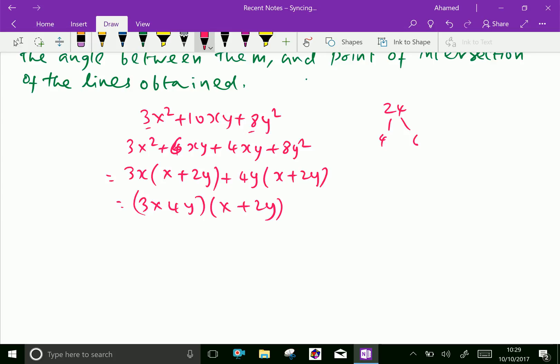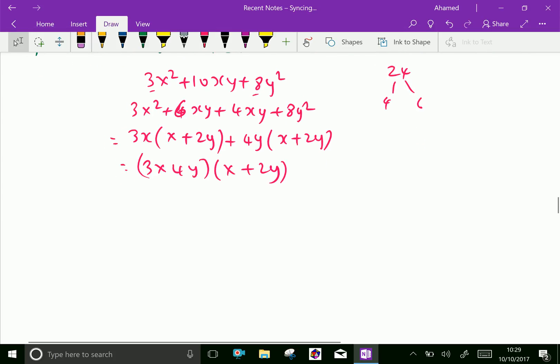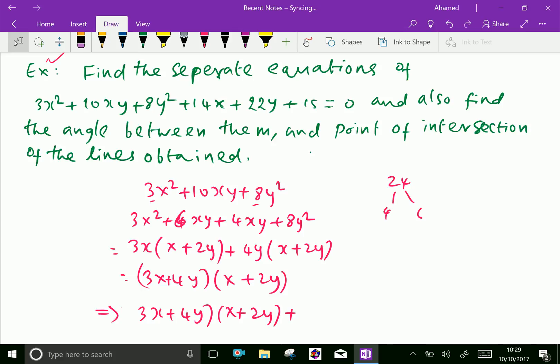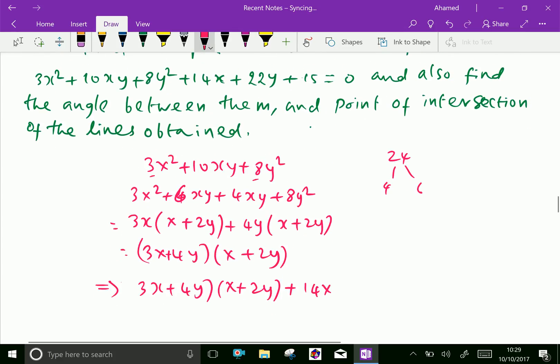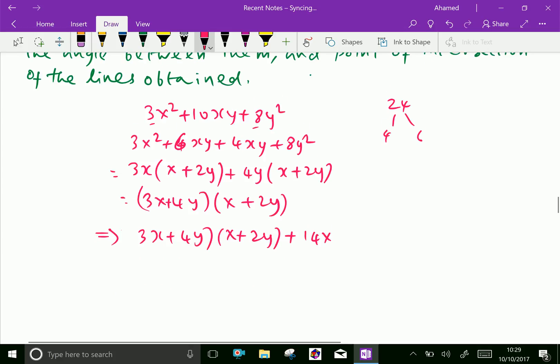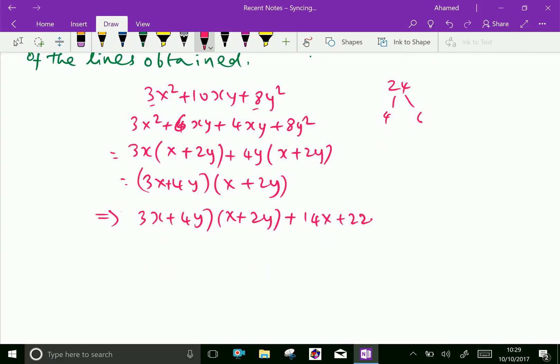Now, write the equation in terms of the factors and remaining part: 3x plus 4y into x plus 2y plus the remaining part is 14x plus 22y plus 15 equals 0.